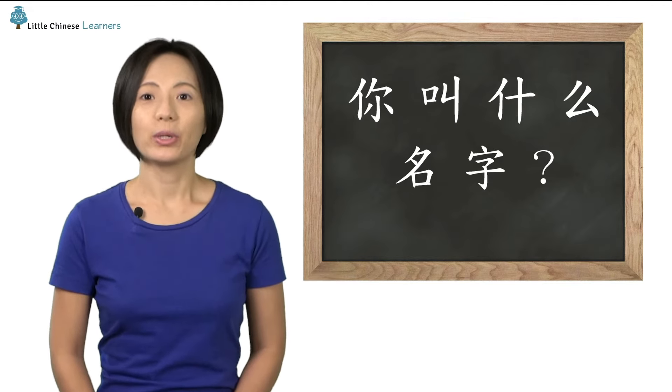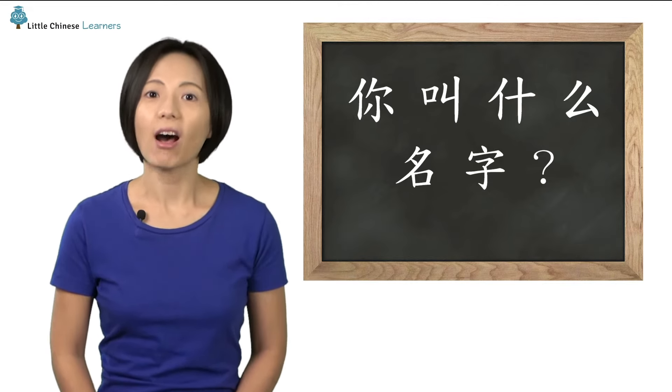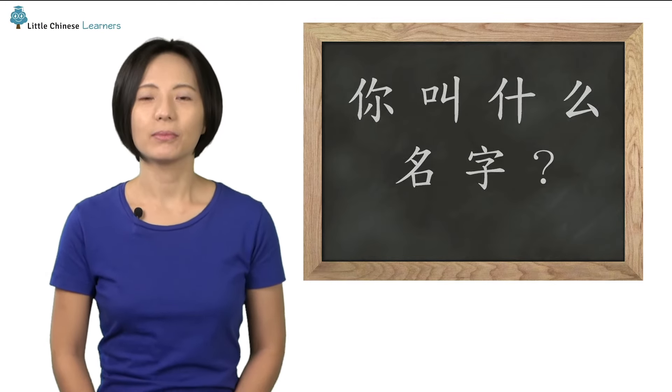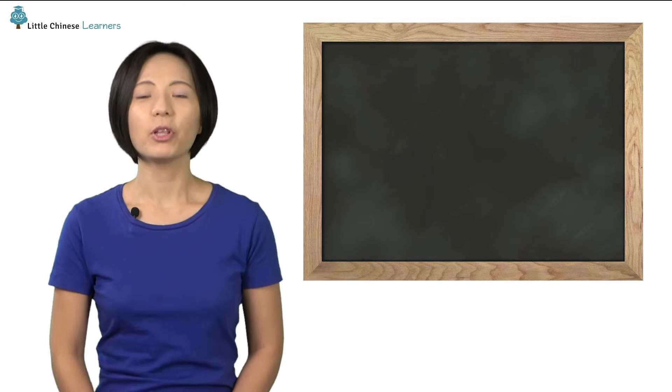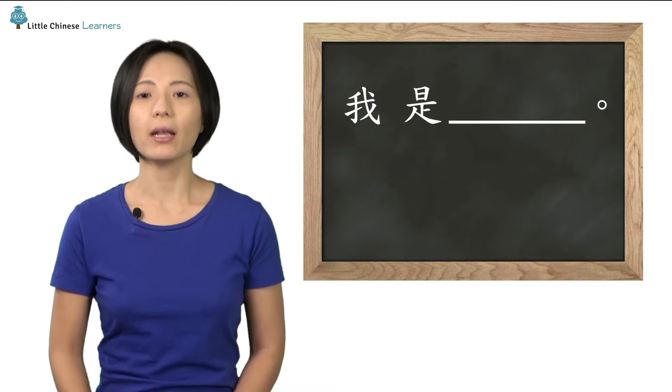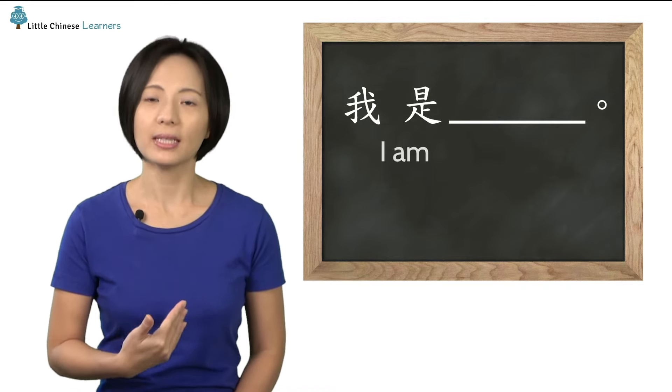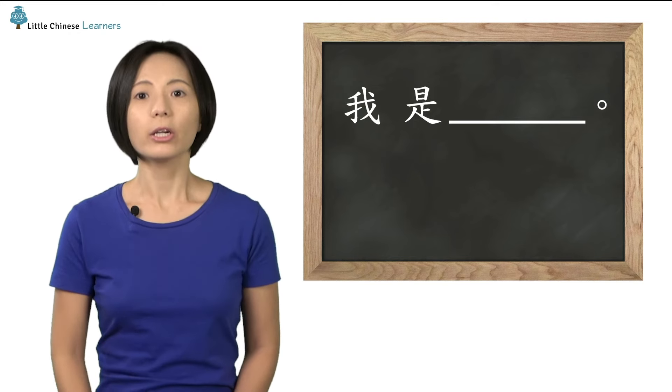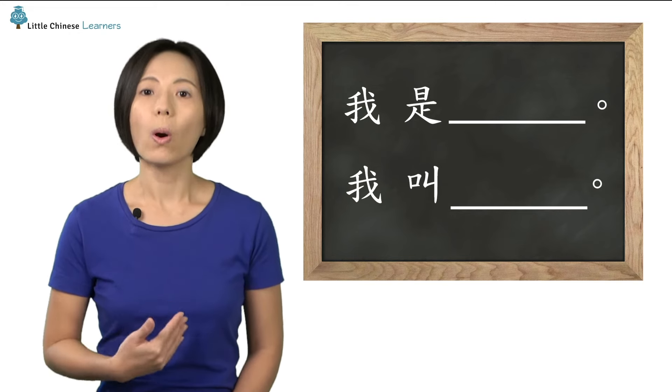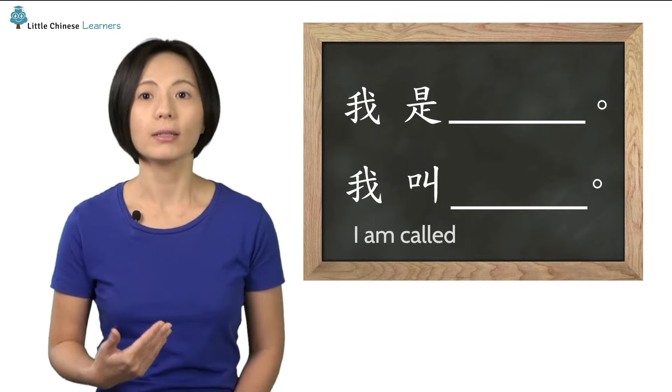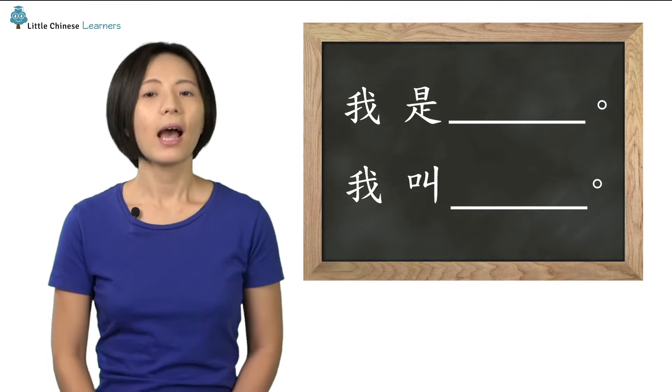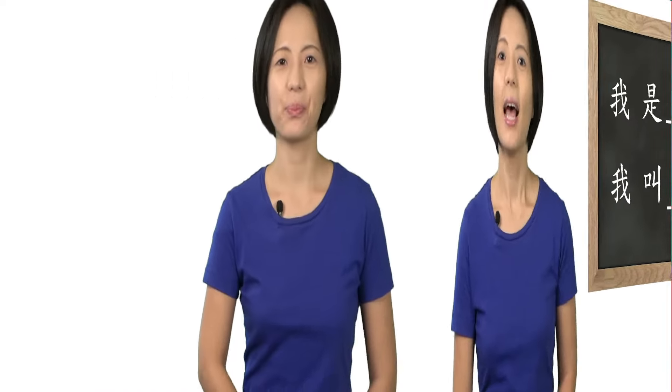What would you say when someone asks you 你叫什么名字? Well, you've learned one way, which is to say 我是Cindy, I am Cindy. Or you can say 我叫Cindy, I am called Cindy. Either one is fine.